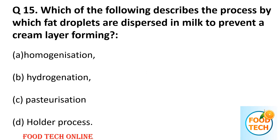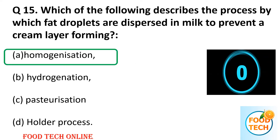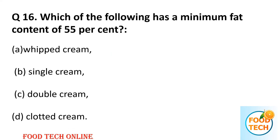Question 15: Which of the following describes the process by which fat drops are dispersed in milk to prevent a cream layer forming? A: homogenization, B: hydrogenation, C: pasteurization, D: Holder process. Answer: A, homogenization.